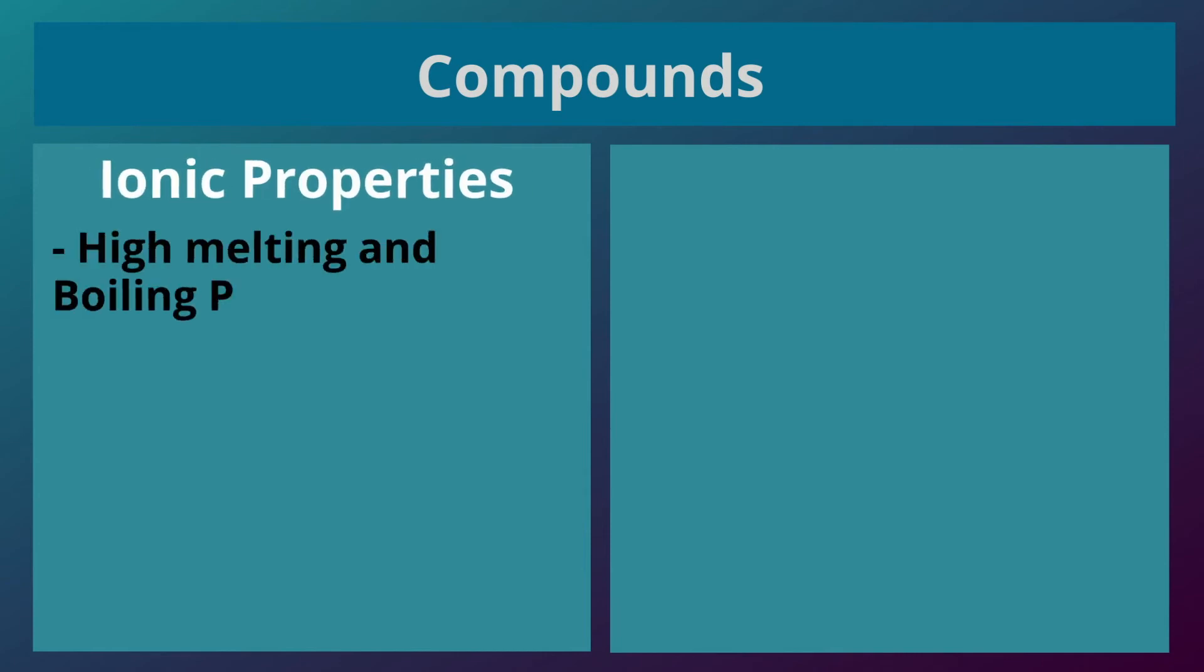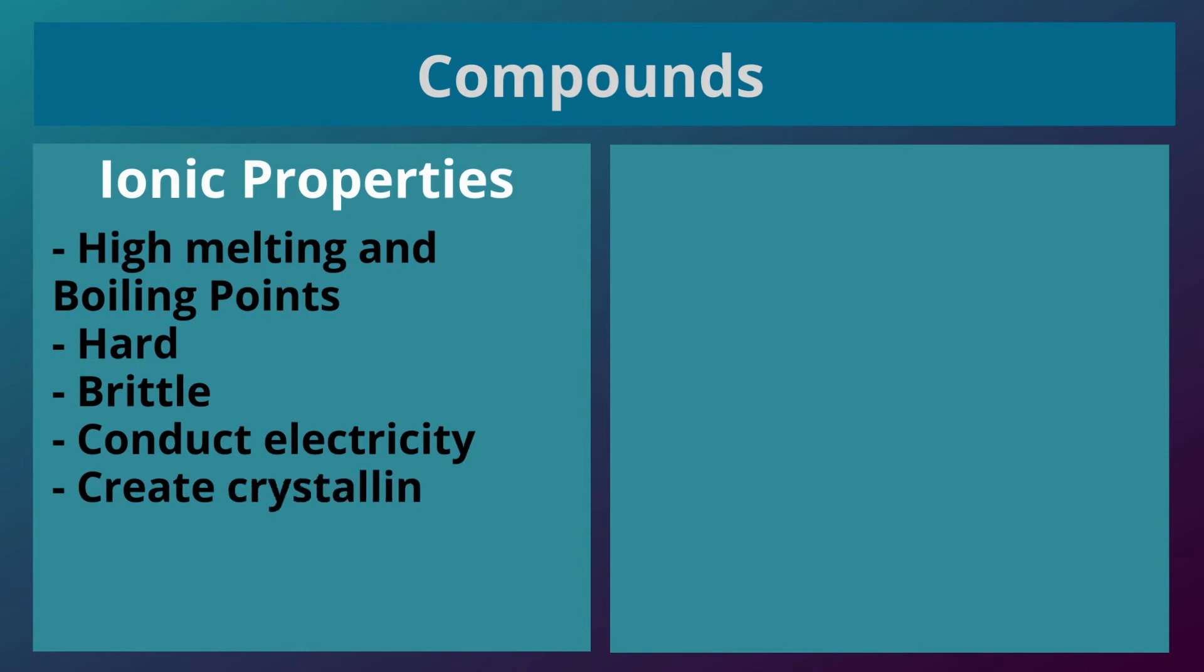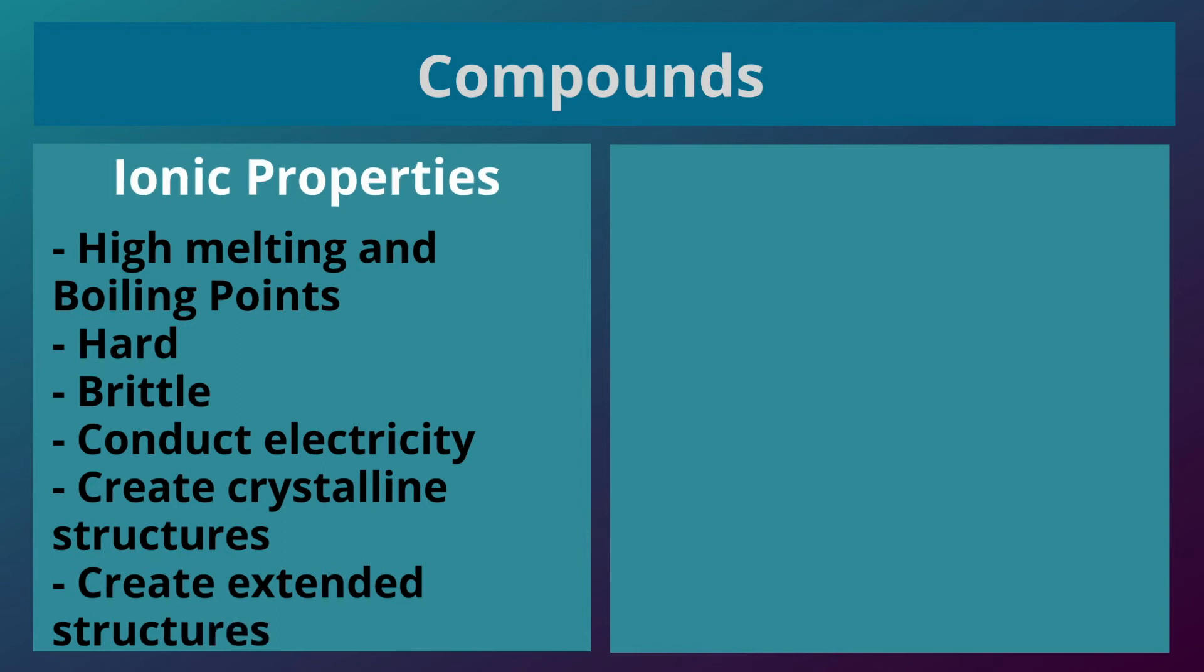Ionic properties: They have high melting and boiling points. They are hard. They are brittle. They conduct electricity. They create crystalline structures and extended structures.